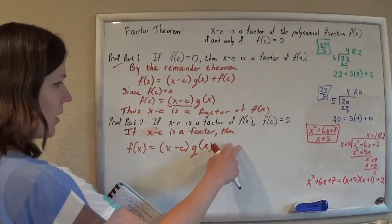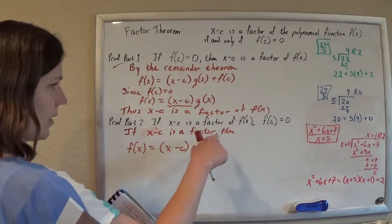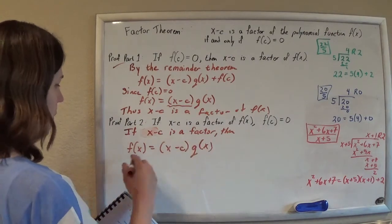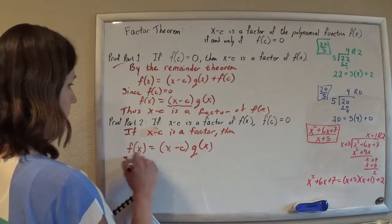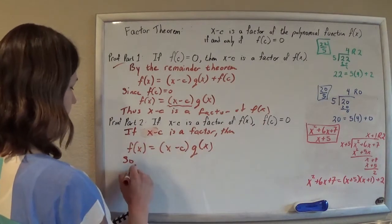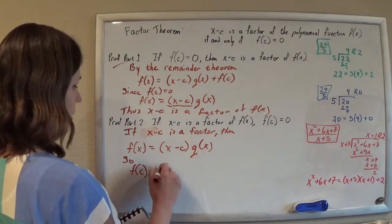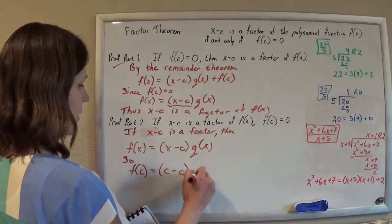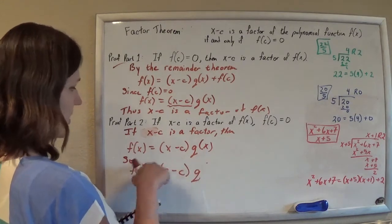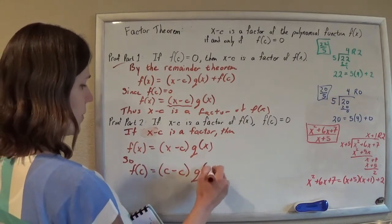And so then we want to figure out what f of c is, right? So f of c would be c minus c, right? Because you're just plugging in c for the x times q of x,